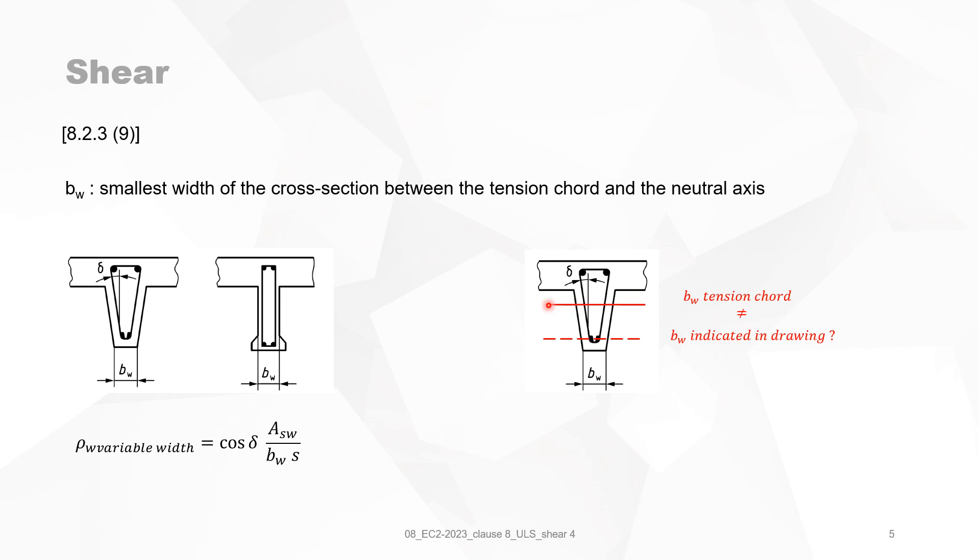Now, if we apply this definition of BW literally, it says that it's the smallest width of the cross section between those two lines. Well, the smallest width between those two lines is the width at the tension cord, which is the width at the point of gravity of the tension reinforcement. And it is not the width indicated on the drawing. So I'm not saying this will be a big difference, but it's not consistent. The definition is not consistent with the drawing.